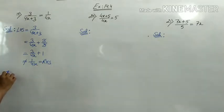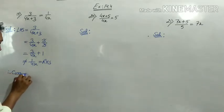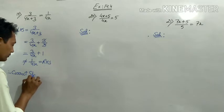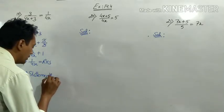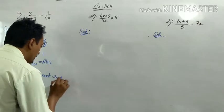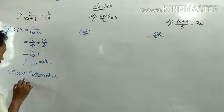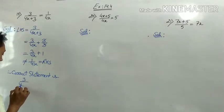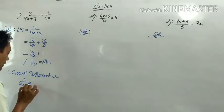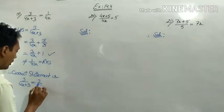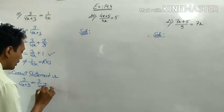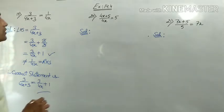So how do we write the correct statement? The correct statement is: 3 upon 4x plus 3 is equal to 3 upon 4x plus 1.